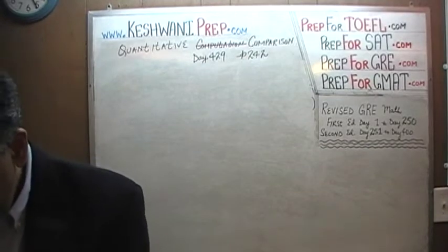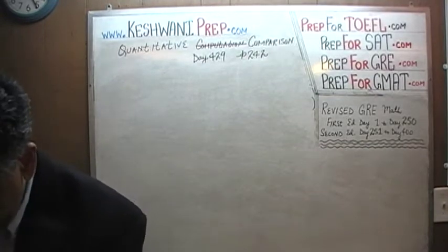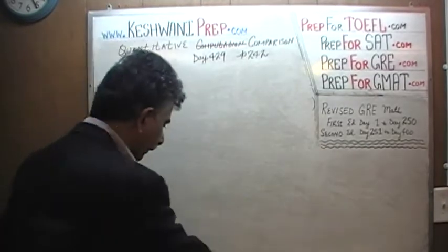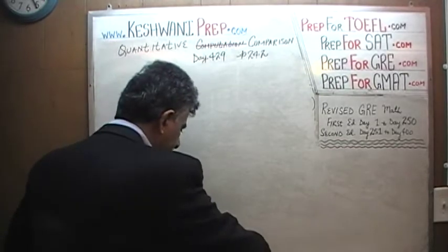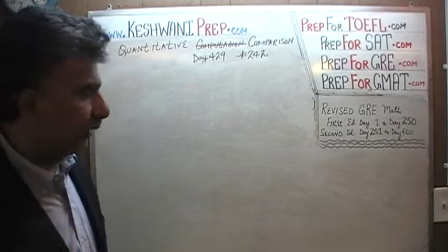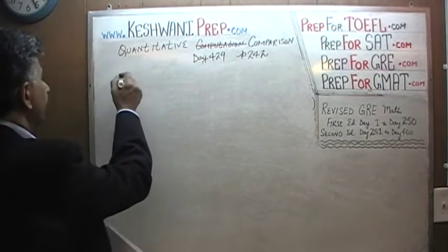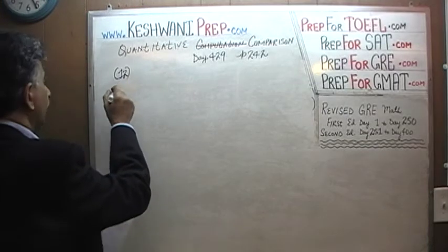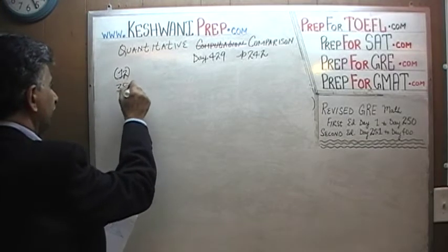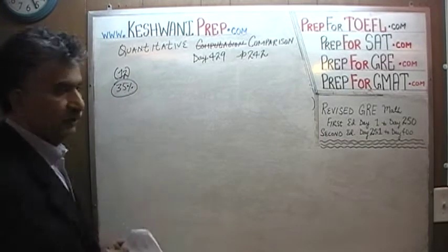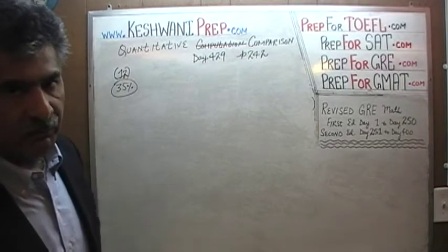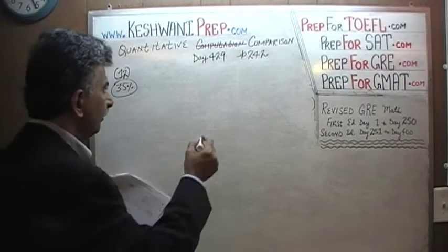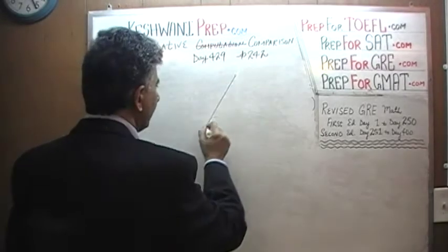Let's take a look at the very first problem — problem number 12. When it appeared in the real exam, only 35% of people had luck with it; 65% of people missed it.